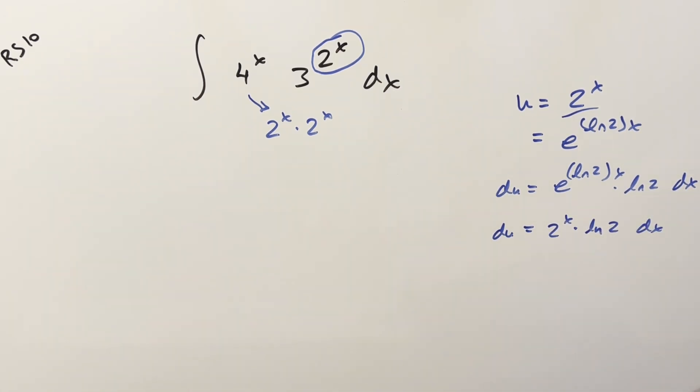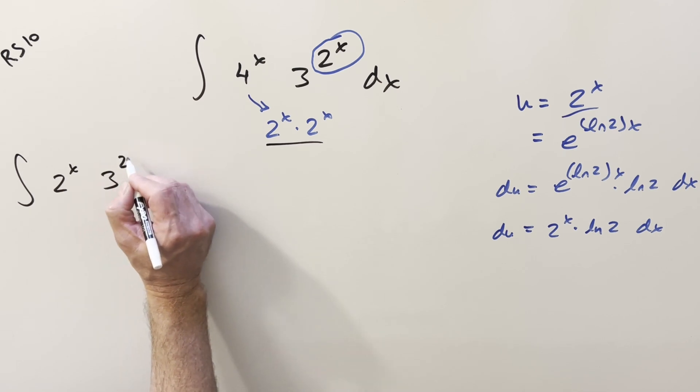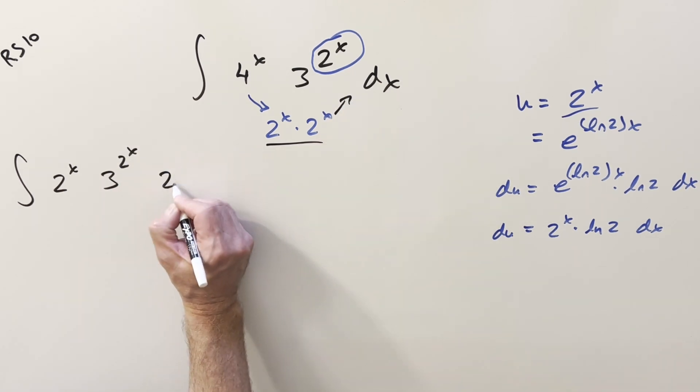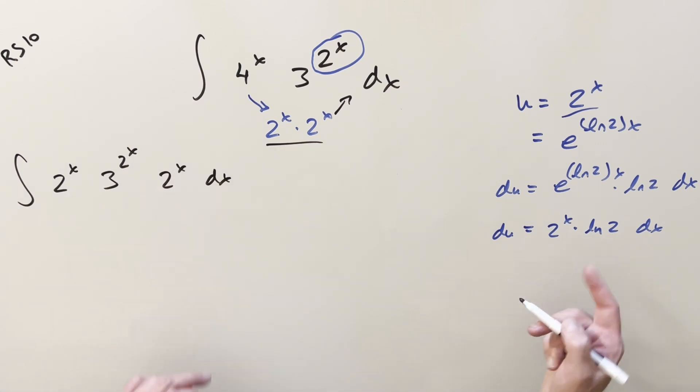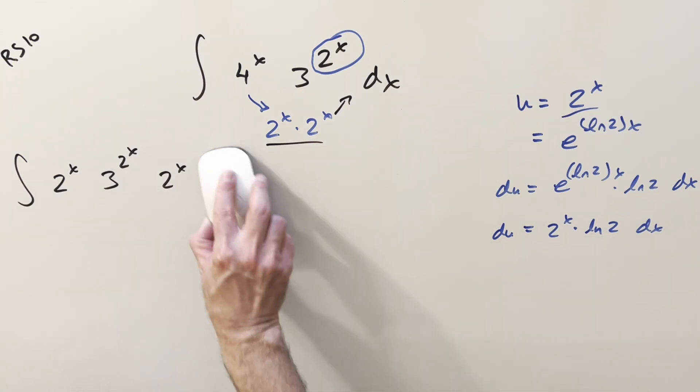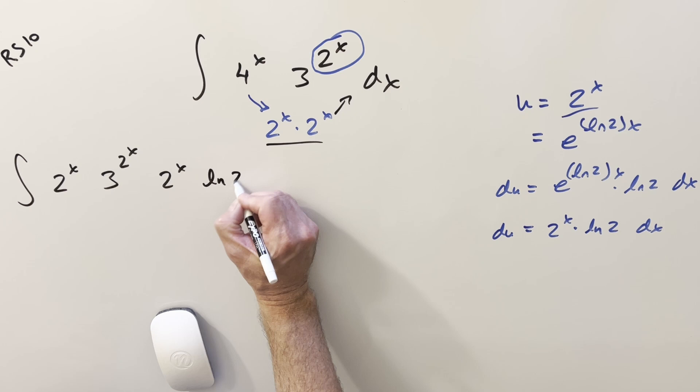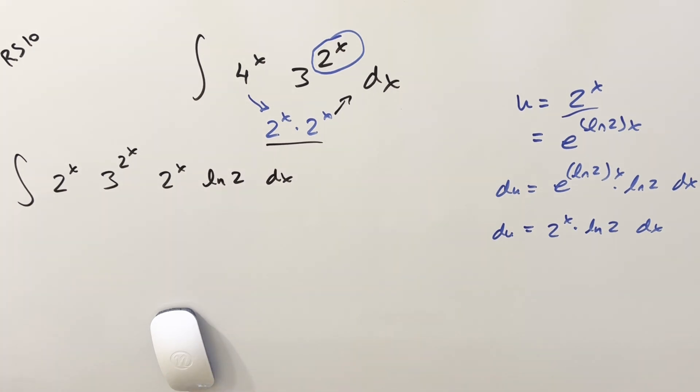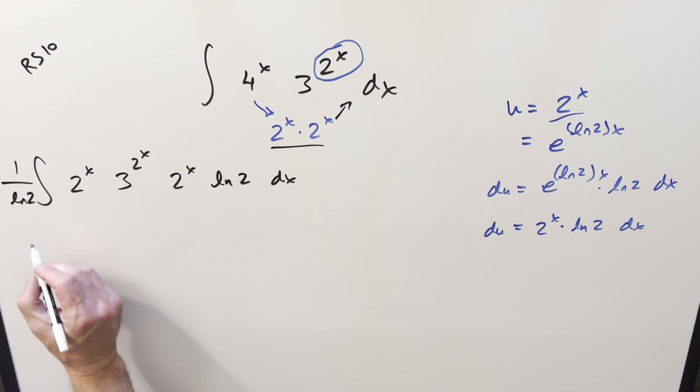So then before I substitute, let me actually just rewrite this to kind of set it up. So I'll split this stuff up, so we'll have it as 2x, 3, 2x, and then we'll bring 1, 2x to the end here and have it as 2x, dx. But in order to set up the du, let me actually multiply in this ln 2 right here. So we'll multiply that in. But so I'm not changing it, let's divide it off in front.